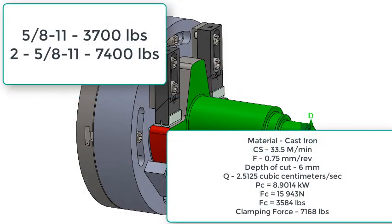To create a clamping force to resist 7,200 pounds, consulting the charts shows that two 5/8-11 bolts can resist up to 7,400 pounds. Therefore two 5/8-11 bolts will properly secure the clamps to resist the cutting force.